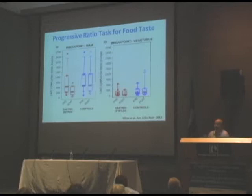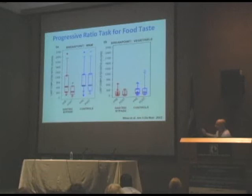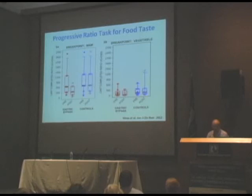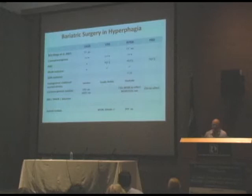In a progressive ratio lever-pressing task, patients were asked to press a button — with exponentially increasing effort — to earn chocolate M&Ms. Compared to before gastric bypass surgery, patients were prepared to work much less for M&Ms, but there was no change in unoperating controls. They also did not change how much they were prepared to work for vegetables. The gastric banding patients did not seem to reduce their effort for food. So there are inherent differences in these two treatments' effects on food reward.